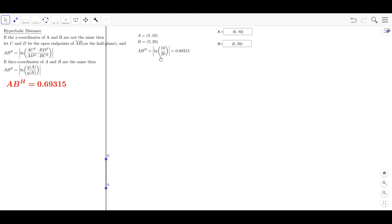Log of 1 half and then absolute value of that which is really just the log of 2. Natural log of 2 which is approximately 0.69315 and that is the hyperbolic distance there.